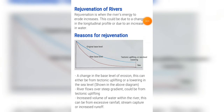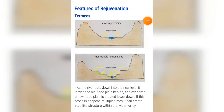A second reason for rejuvenation is when a river suddenly flows over a steep gradient, which could be caused by tectonic uplifting. A third reason is when there's an increase of volume of water within the river. This increase leads to an increase of energy, which therefore leads to an increased amount of erosion. This can result from excessive rainfall, stream capture, or increased runoff.